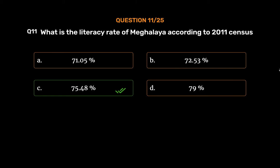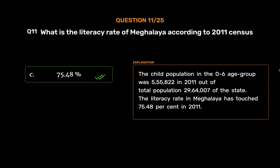The correct answer is Option C: 75.48%. The child population in the 0–6 age group was 5,55,822 in 2011, out of a total population of 29,64,007 of the state. The literacy rate in Meghalaya has touched 75.48% in 2011.